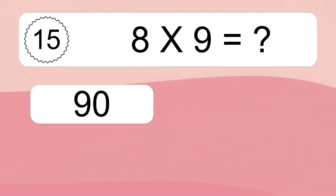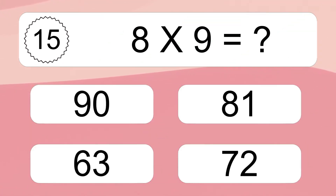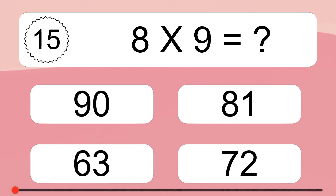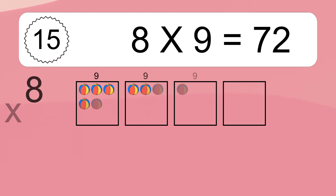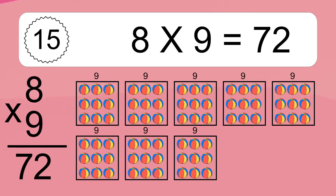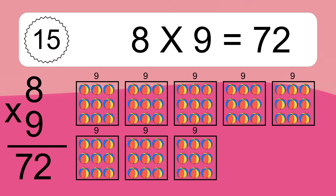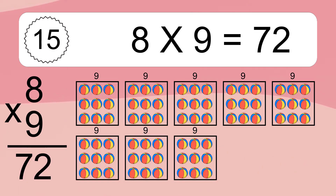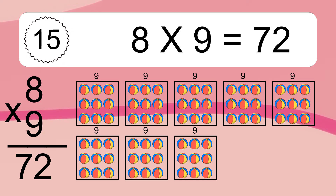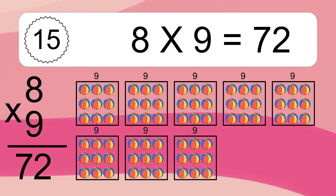Eight times nine equals what? Eight times nine equals seventy-two. We have eight boxes and each box has nine colorful balls inside. If you count all the balls in all the boxes together, you will have eight times nine balls. This equals seventy-two balls.